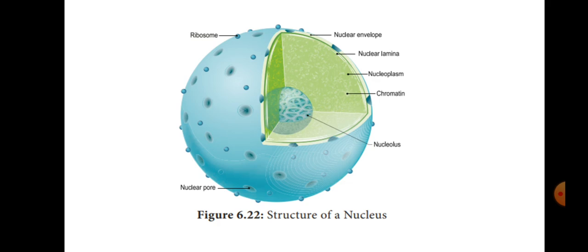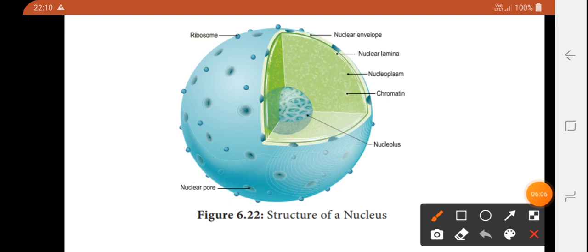The Nucleus is the hero — the main controlling organelle of the cell. It is covered by the Nuclear Envelope, which consists of an inner membrane and an outer membrane. The outer membrane is called the nuclear membrane and contains nuclear pores that are used for transport.